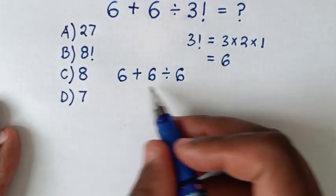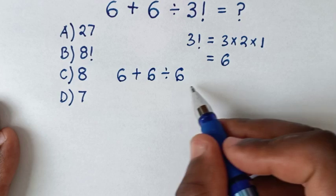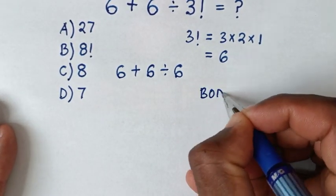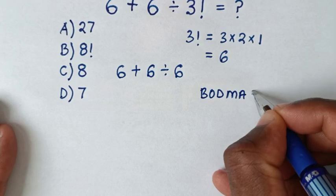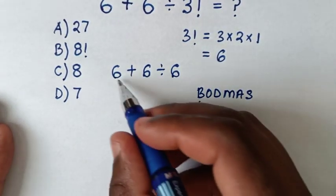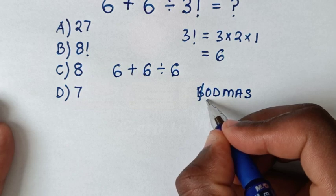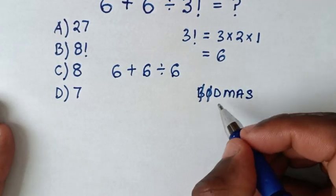Now to solve here we'll solve by using BODMAS rule. So let's rewrite the rule which is BODMAS whereas B is bracket. Into this problem we don't have bracket or order or exponents we don't have order into this problem.